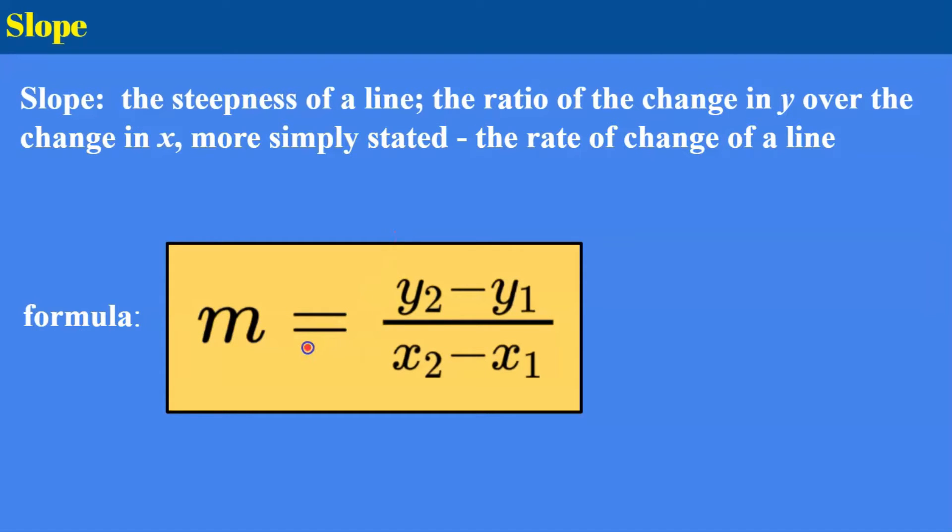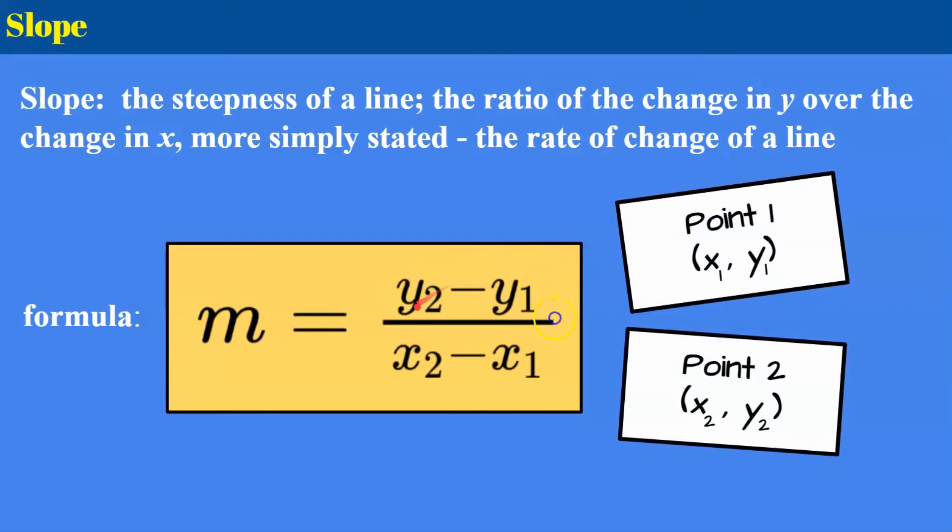So here is the slope formula in algebra. Slope is referred to using the variable m and here is our change in y which is representing a point, a difference in the y coordinates of point 1 and point 2. So these subscripts you see here, the twos and the ones, we're talking about point 1 and point 2. So if you have two points that fall on a line you can find slope. You could know 10 points on the line. You can pick any two points. It doesn't matter which two points you pick.